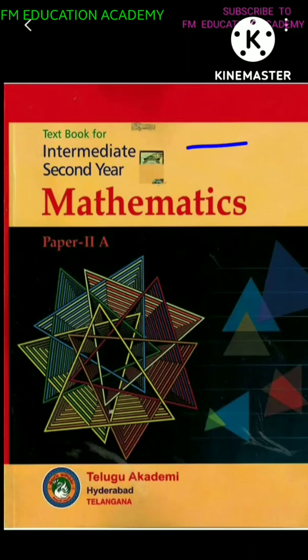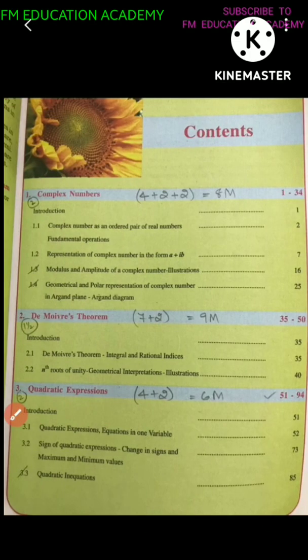This is your textbook for intermediate second year mathematics, paper 2A. Totally, you have 10 chapters.